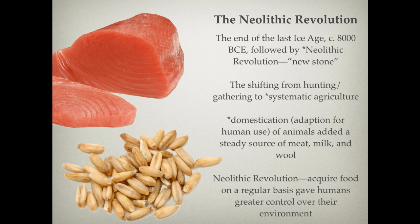Last we left off, we were talking about the Paleolithic man and his attempt to master his environment through manipulating various resources, particularly fire. We end up seeing a shift into an agricultural-based society, no longer nomadic, after the last Ice Age, somewhere around 8,000 BCE. This phase is known as the Neolithic Revolution — that is, the new Stone Age.